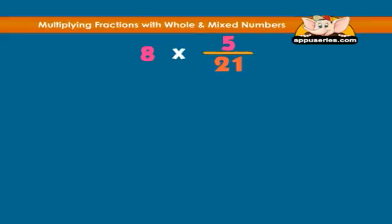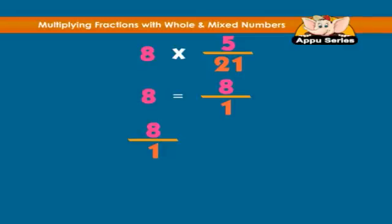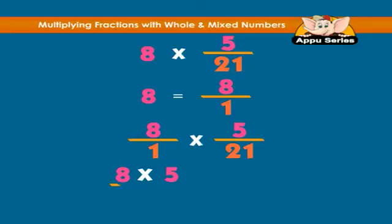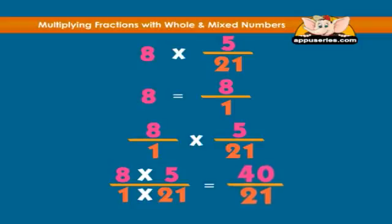Example: 8 times 5 over 21. We can write the number 8 as 8 over 1. Now we multiply the fractions: 8 over 1 times 5 over 21 equals 8 times 5 over 1 times 21, which equals 40 over 21.